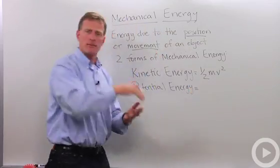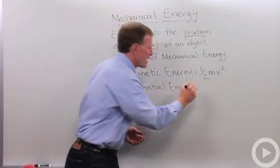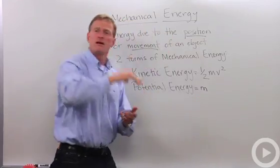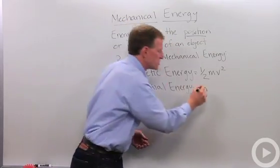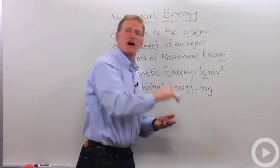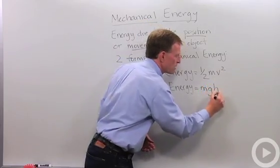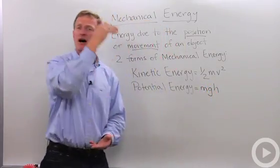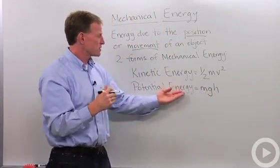Potential energy, when we're talking about positional energy, we need to know the mass and then the force of gravity, g, and then the height we're moving it up. So mass times gravity times height gives us potential energy.